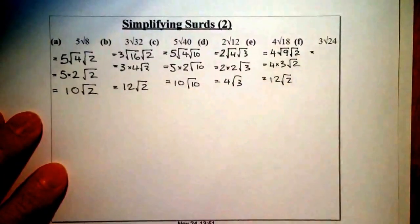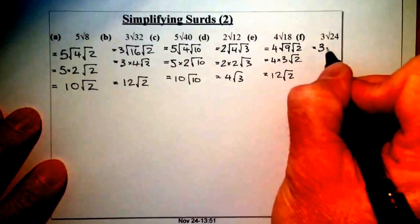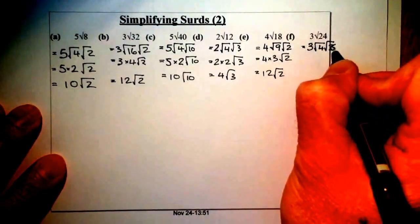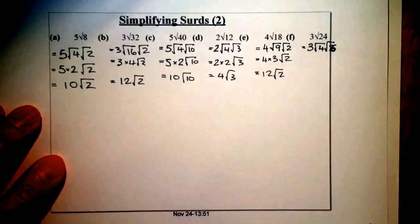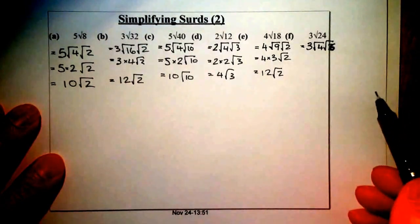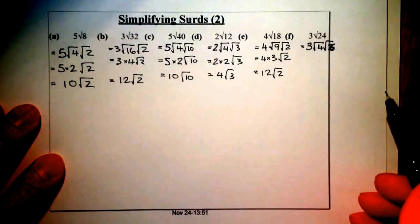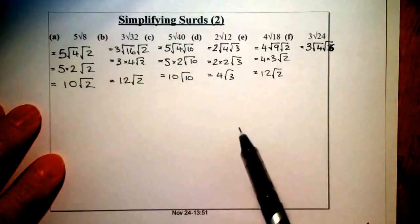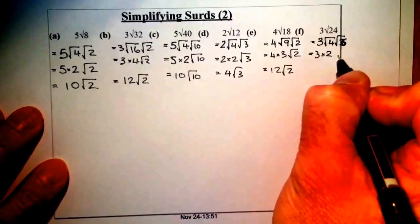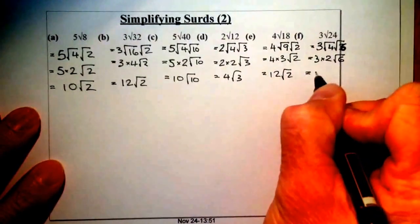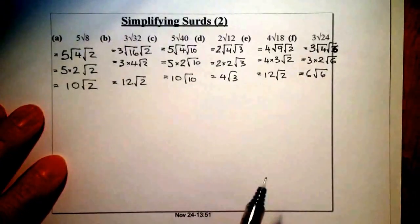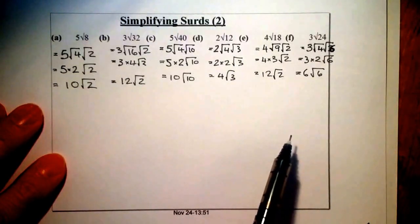Final question: 3 root 24. I break 24 into root 4 and root 6, since 4 times 6 gives 24. I can't use 12 and 2 because 12 isn't a square number. If I used 8 and 3, remember root 8 simplifies further, so there'd be extra work. Using root 4 and root 6: I get 3 times 2 root 6, giving a final answer of 6 root 6. I can't break root 6 down further — root 2 and root 3 are not square numbers, so they won't help simplify it.